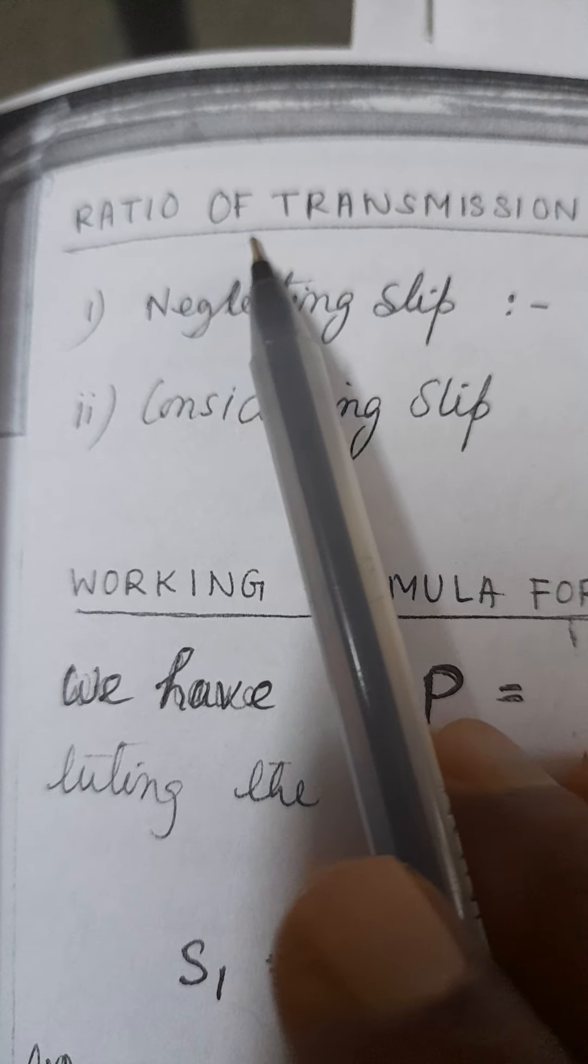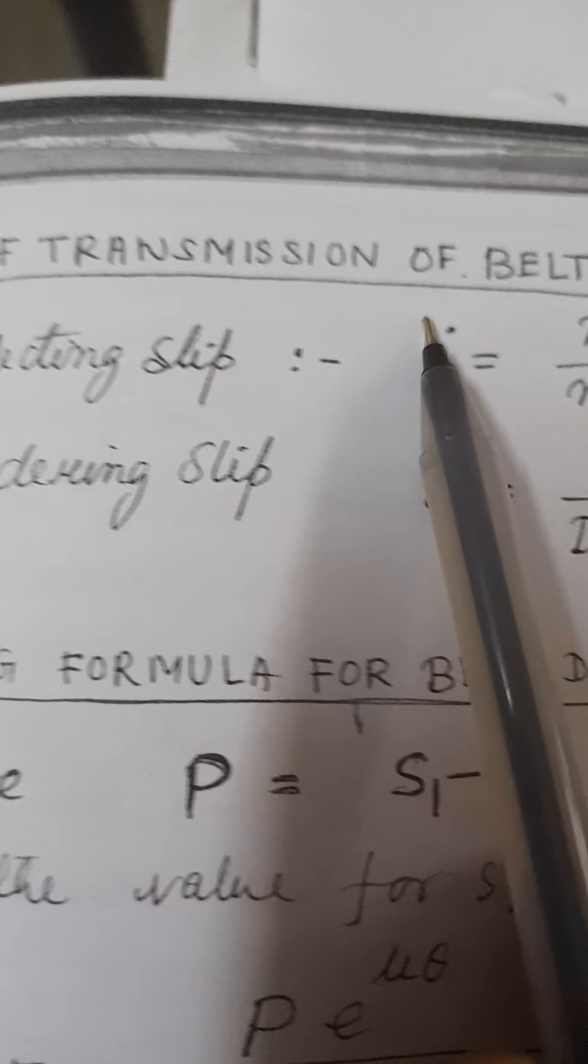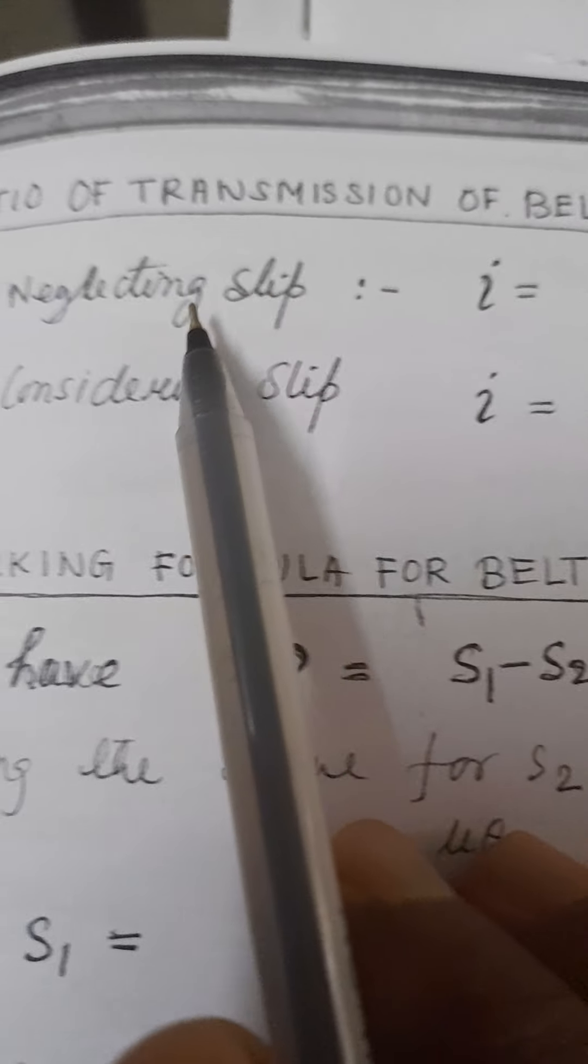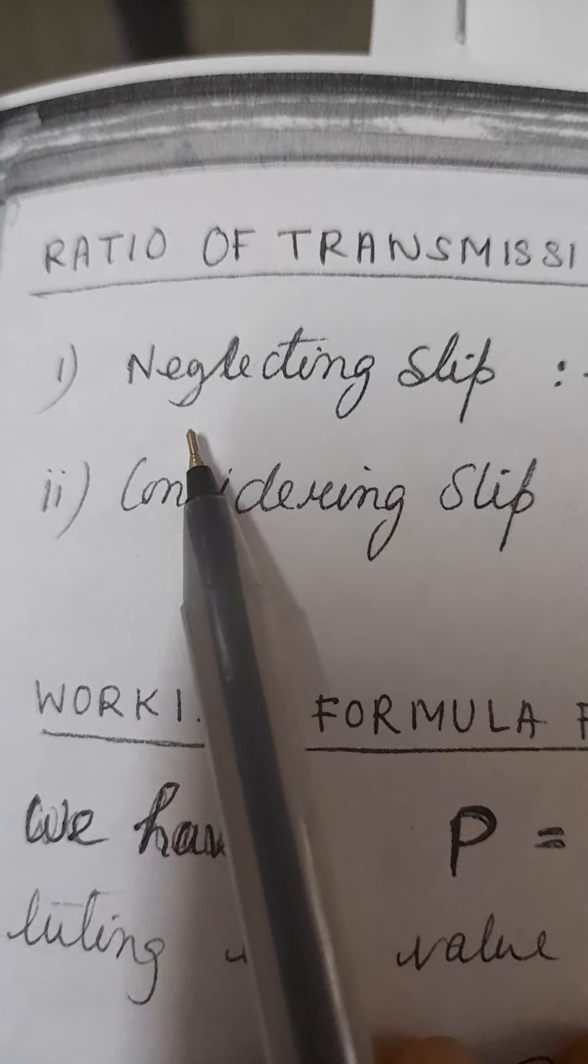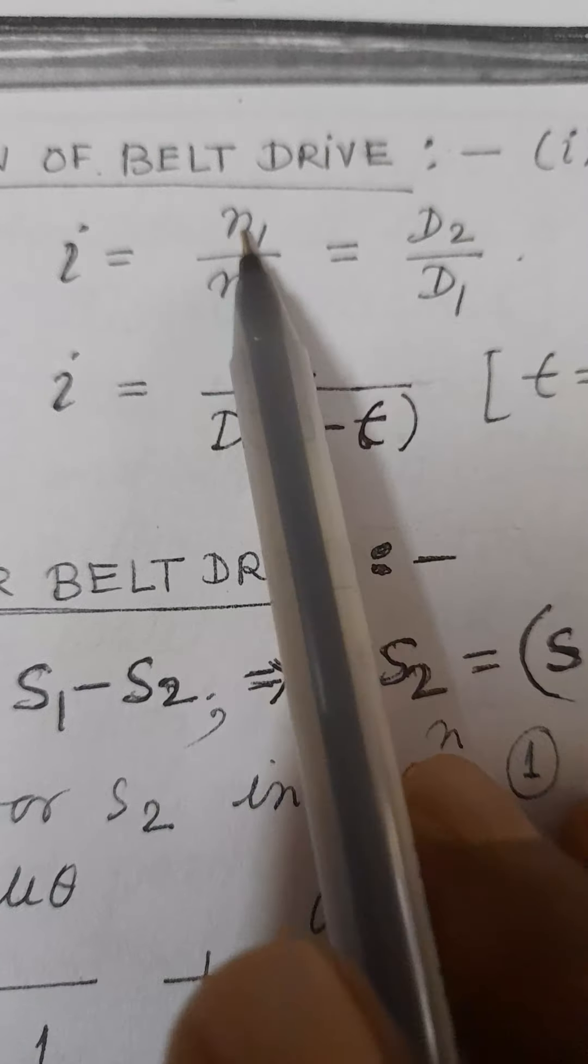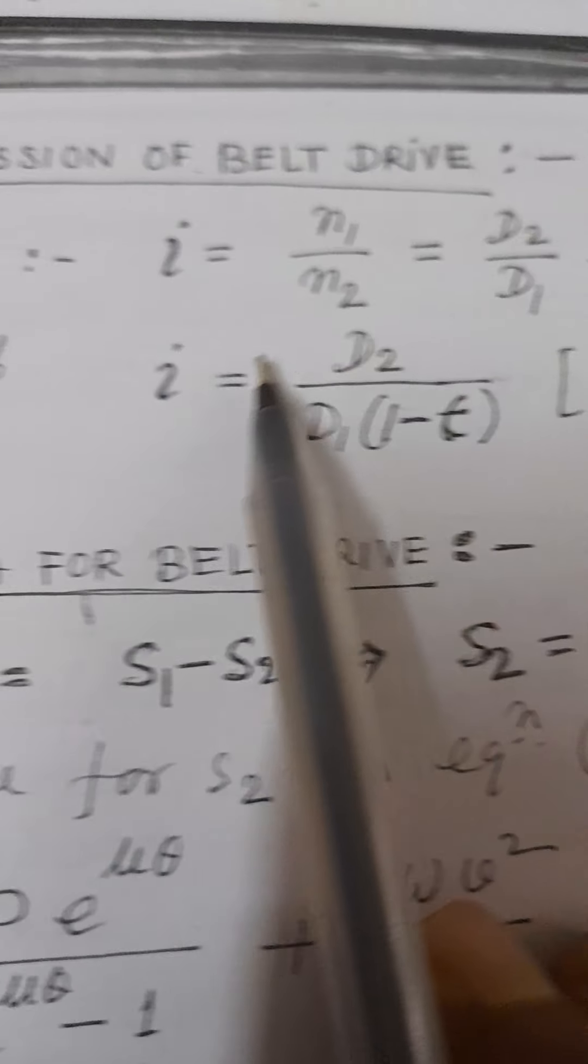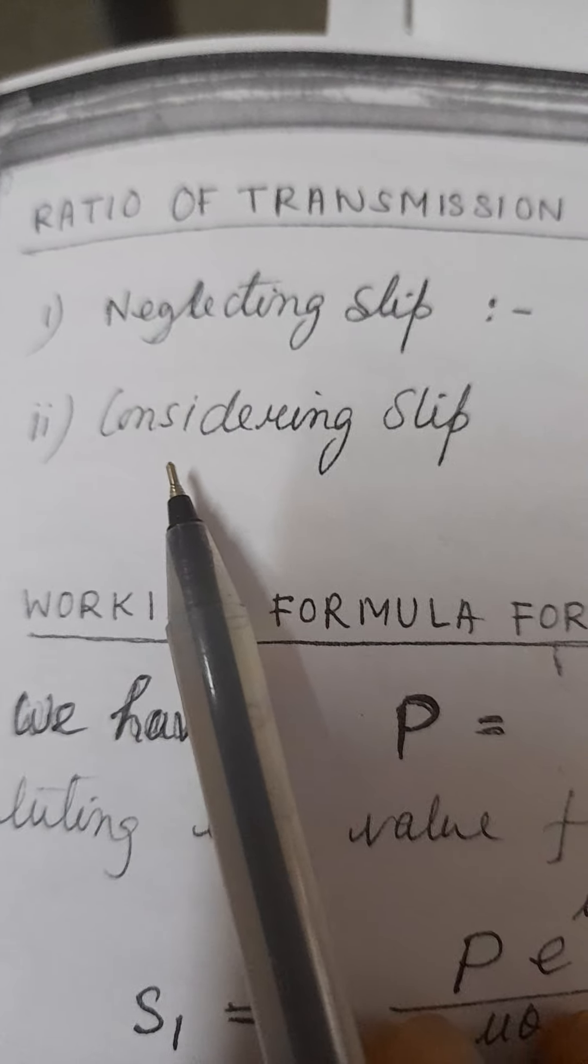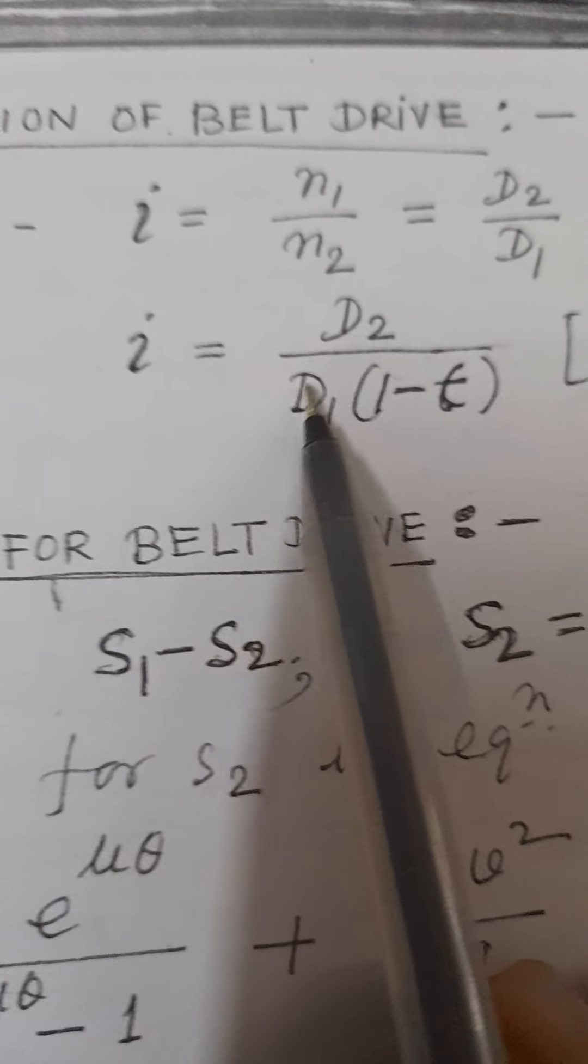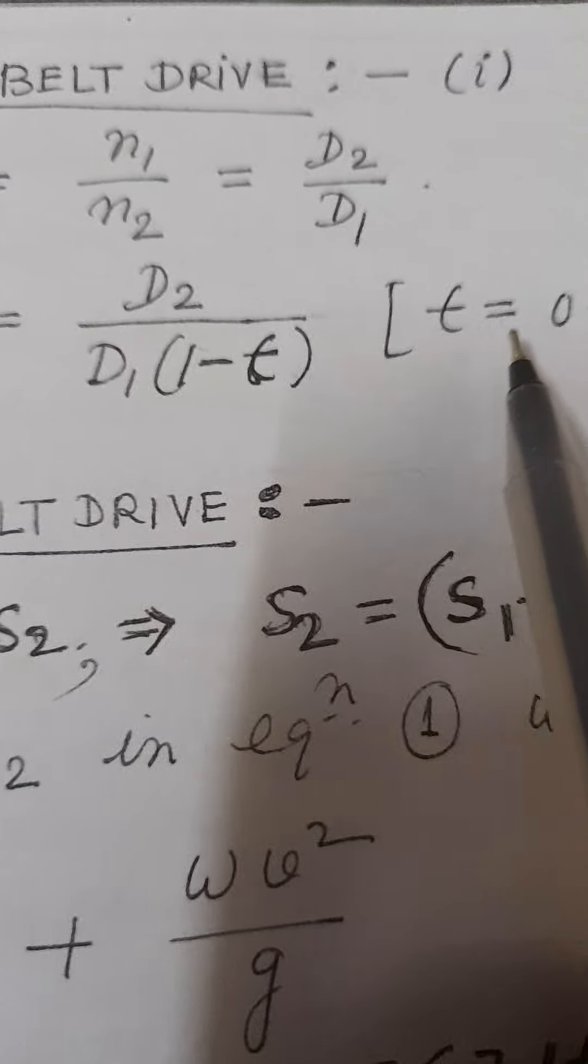Now, the ratio of transmission of belt drive considering slip: the ratio n1 by n2 is d2 by d1. This is the epsilon value which is given.